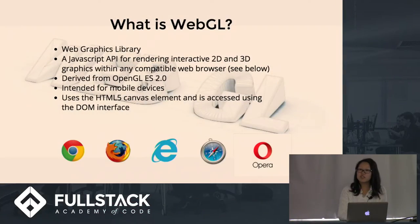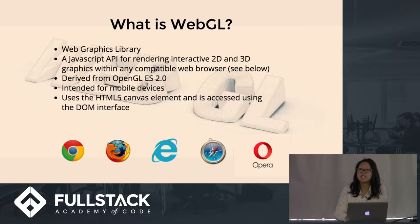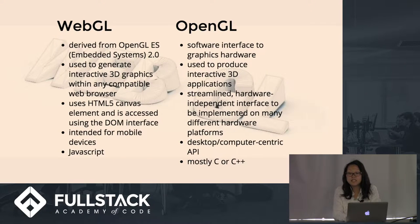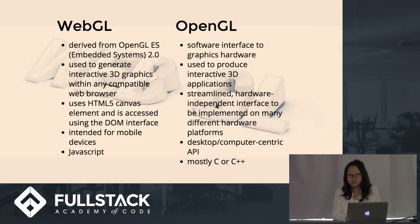What is WebGL? WebGL stands for Web Graphics Library. Simply put, it is a JavaScript API for rendering interactive 2D and 3D graphics within any compatible web browser. WebGL is actually derived from OpenGL, which is a computer-centric API used for rendering 2D and 3D vector graphics that is typically used to interact with a GPU, or a graphics processing unit, to achieve hardware-accelerated rendering.